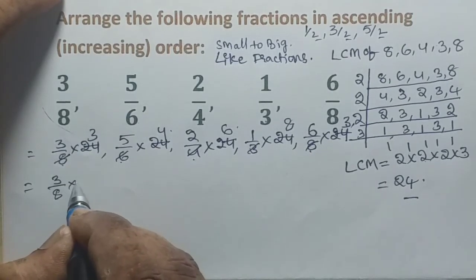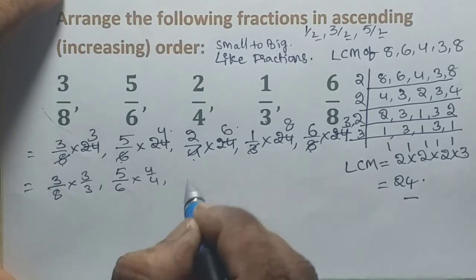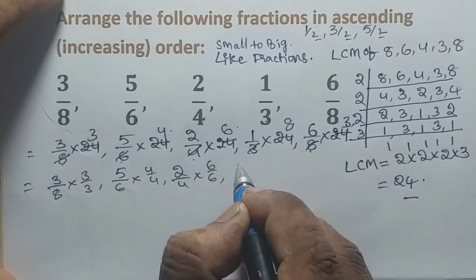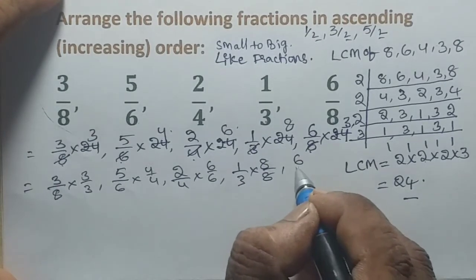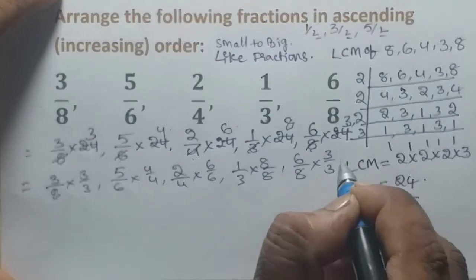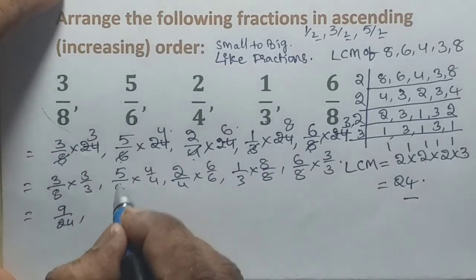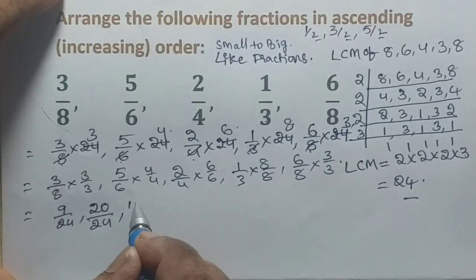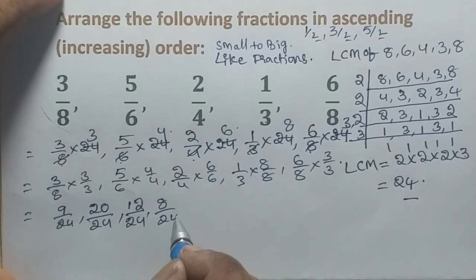Now we convert each fraction using LCM 24 as the common denominator. 3 by 8 multiplied by 3 by 3 gives 9 by 24. 5 by 6 multiplied by 4 by 4 gives 20 by 24. 2 by 4 multiplied by 6 by 6 gives 12 by 24. 1 by 3 multiplied by 8 by 8 gives 8 by 24. 6 by 8 multiplied by 3 by 3 gives 18 by 24.